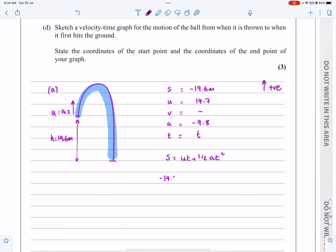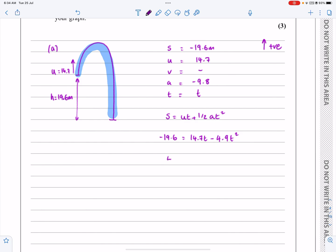So I've got minus 19.6 is equal to U T, 14.7 T minus, because of the minus 9.8, minus 4.9 T squared. Turn that into a quadratic, 4.9 T squared minus 14.7 T minus 19.6 equal to zero, taking everything over to one side. And now with this one, you can solve it using the quadratic formula.